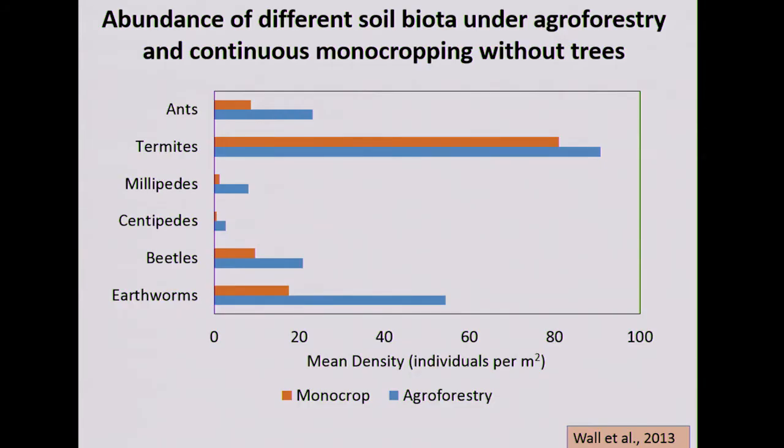Within agroforestry systems, unlike monocrops, we have multiple trees, grasses, and shrubs, so diversity is higher compared to monocrop systems. A study by Wahl compared monocrop and agroforestry for mean density of ants, termites, millipedes, centipedes, beetles, and earthworms. All these counts were higher within the agroforestry system compared to the monocrop system.